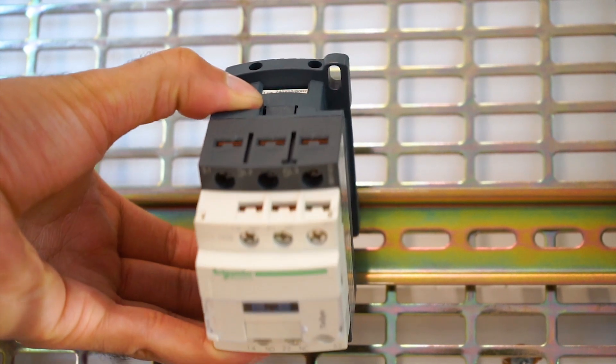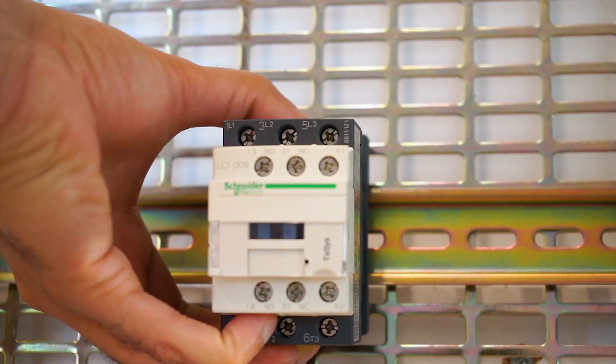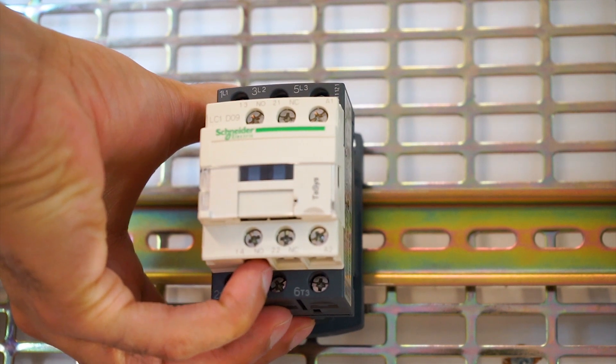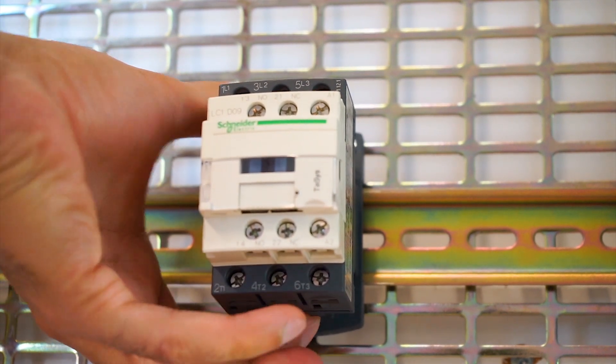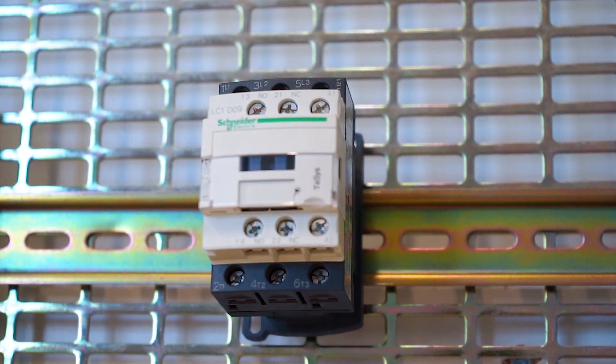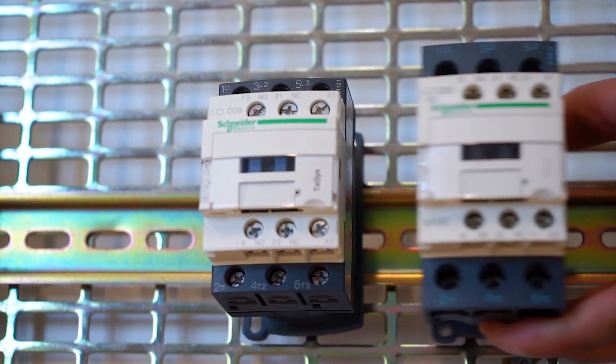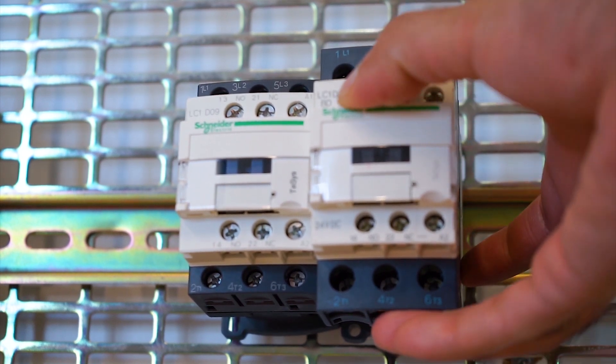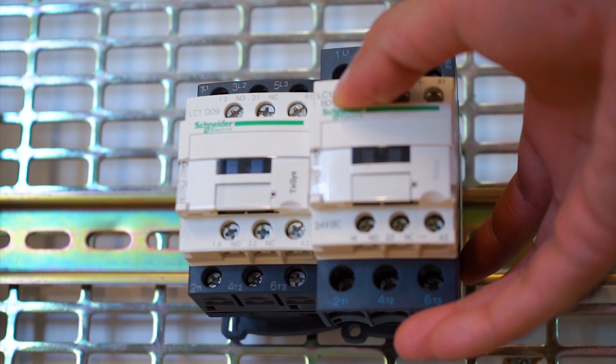With DC contactors, you will see the part number is usually written complete with the coil voltage. I'll show you one. So I have one here, this is an LC1D25BD. As you can see, that BD is indicating its 24 volt DC coil.